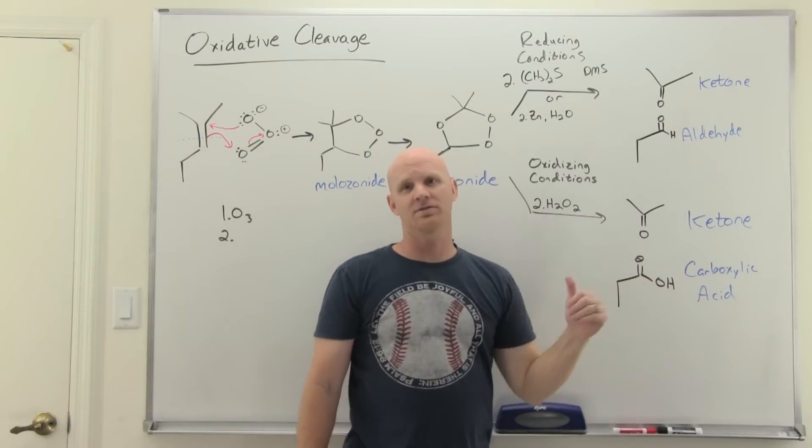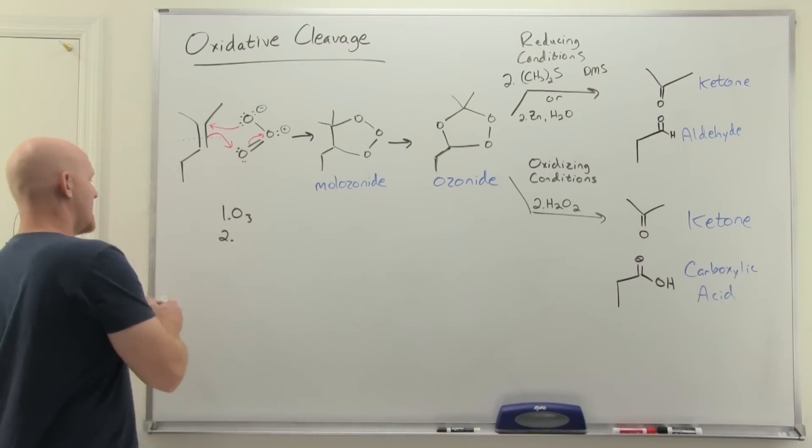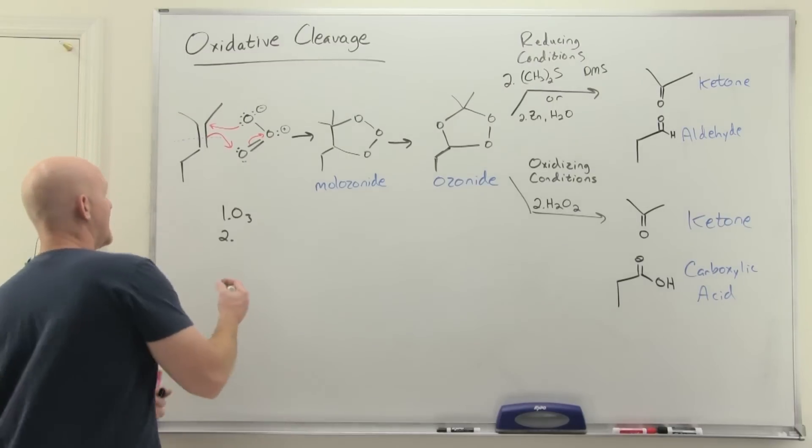If you use reducing agents, aldehydes stay aldehydes. If you use an oxidizing agent like peroxide, then your aldehyde is going to become a carboxylic acid for your product instead. We got one other way we can pull this off instead of ozonolysis - turns out we can do the same cleavage, oxidative cleavage, with permanganate.